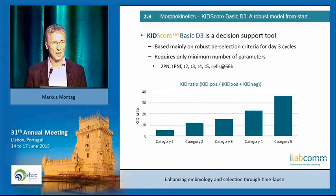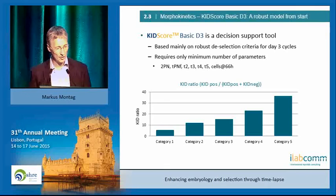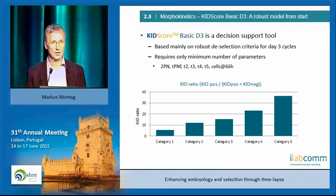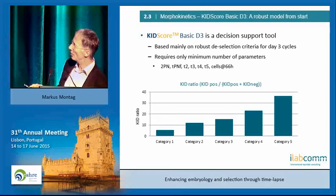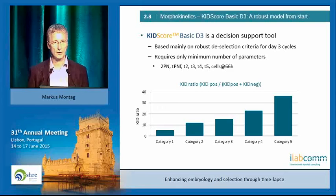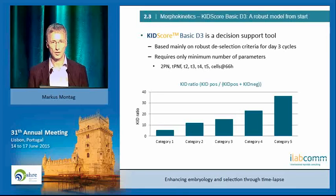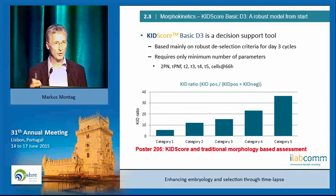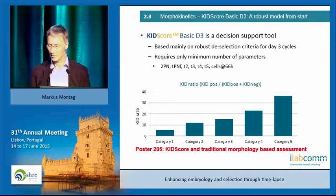There is a solution called KIDScore. KID means Known Implantation Data, and you also get a chart — KID — a very clever name. KIDScore is a decision support tool using robust criteria to deselect embryos, with only a few easy-to-annotate parameters. On day three you already have a clear distinction: embryos with a higher KIDScore category versus a lower category show something like a sevenfold difference in implantation rate. You can simply use that straight away. There is also a poster outside — poster 205 — showing how this compares to standard morphology assessment by embryologists.